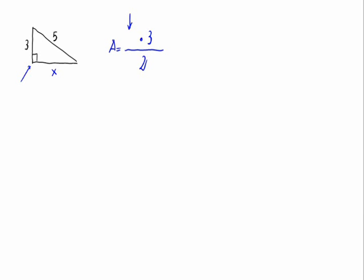The Pythagorean theorem tells us that the base squared plus the height squared is equal to the hypotenuse squared. So from here we would have x squared plus 3 squared that is 9 equal 5 squared that is 25.